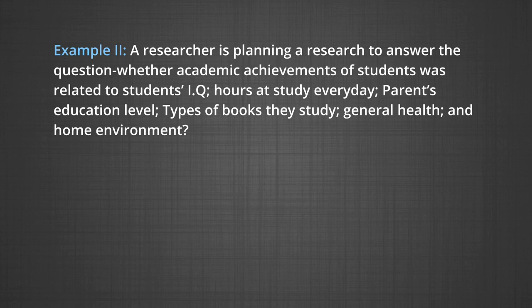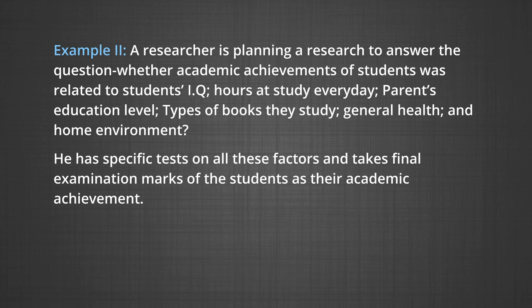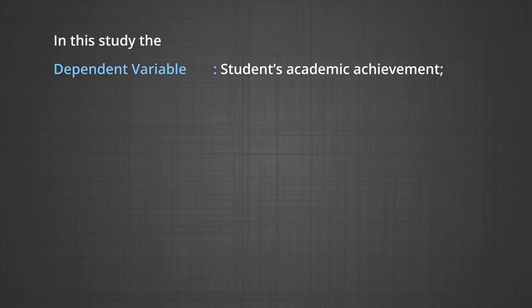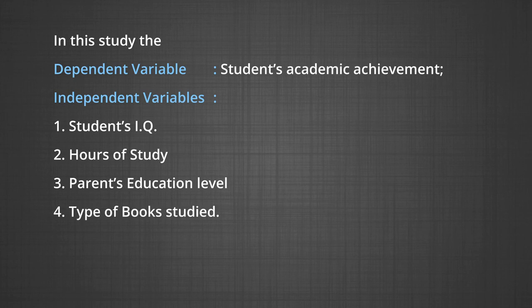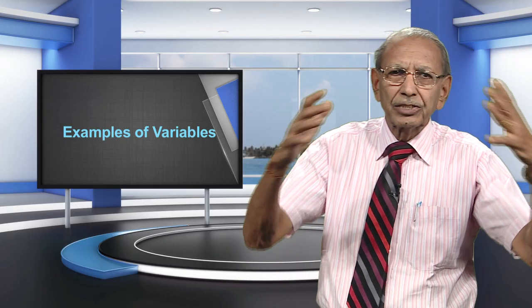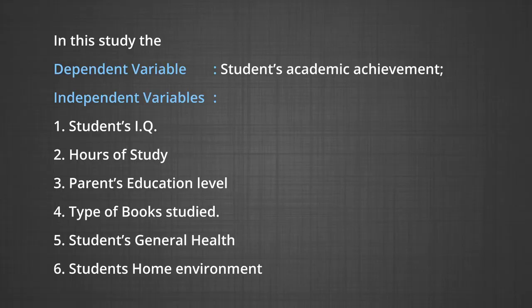Example two: A researcher is planning a research to answer the question whether academic achievement of students is related to students' IQs, hours of study every day, parents' education level, types of books they study, general health, and home environment. He has some specific tests on these factors and takes the final examination marks of the students as their academic achievement. In this study, the dependent variable is students' academic achievement, and the independent variables are students' IQ, hours of study, parents' education level, type of books studied, students' general health, and students' home environment. In this way, there are more than one independent variables.